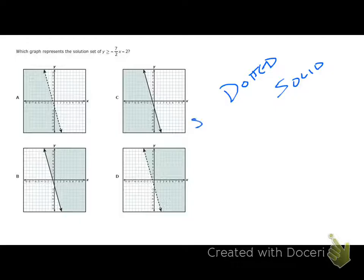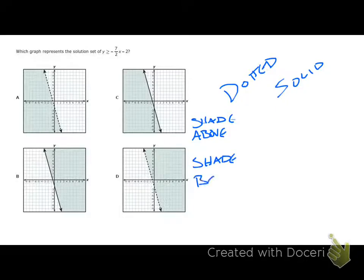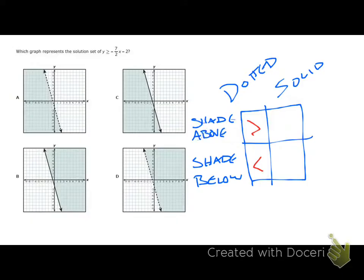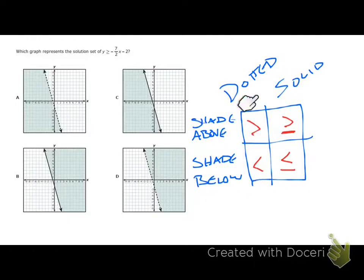Here's a little table to remember: dotted line shading above means greater than; dotted line shading below means less than; solid line shading above means greater than or equal to; solid line shading below means less than or equal to. Basically, to shade above you have the greater than symbols, to shade below you have the less than symbols. Whether it's dotted or solid depends on whether you have the 'or equal to' part or not.